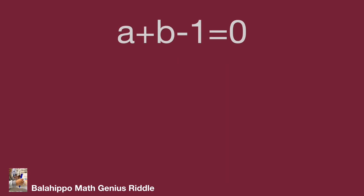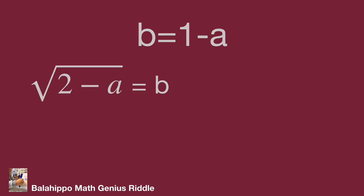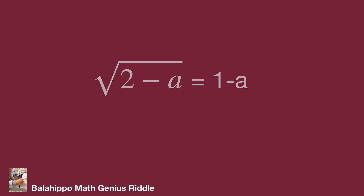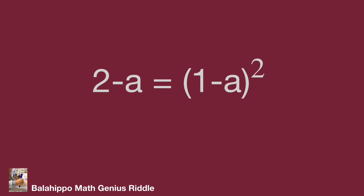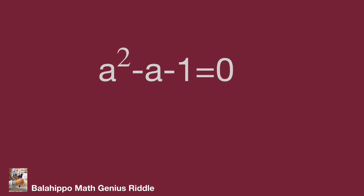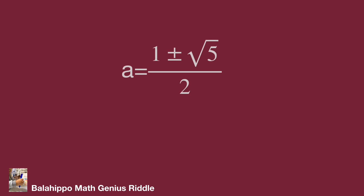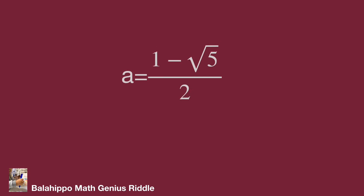When a + b + 1 = 0, then b = 1 − a. Substituting b = 1 − a into √(2−a) = b and squaring both sides gives 2 − a = (1 − a)². Expanding and simplifying, moving all terms to the left side: a² − a − 1 = 0. Using the quadratic formula: a = (1 ± √5) / 2. Checking both values in the original equation, a = (1 − √5) / 2 is the valid answer.